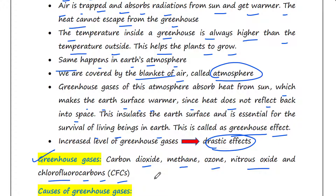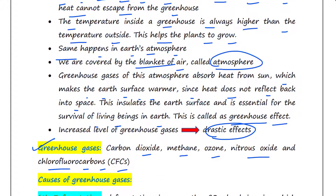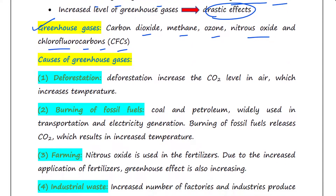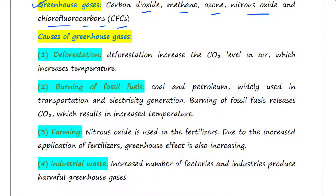So what are the greenhouse gases? Carbon dioxide, methane, ozone, nitrous oxide, and chlorofluorocarbons (CFCs) are major greenhouse gases. Let's talk about the causes of greenhouse effect.